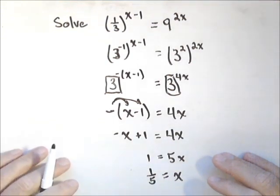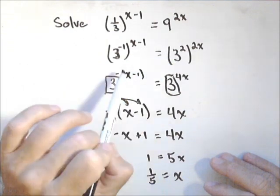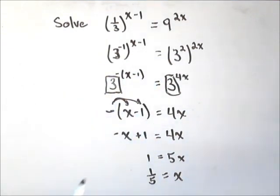And that's how we can solve using like bases. We do what we need to do to get both sides to have the same base, and then we can set their exponents equal to each other.